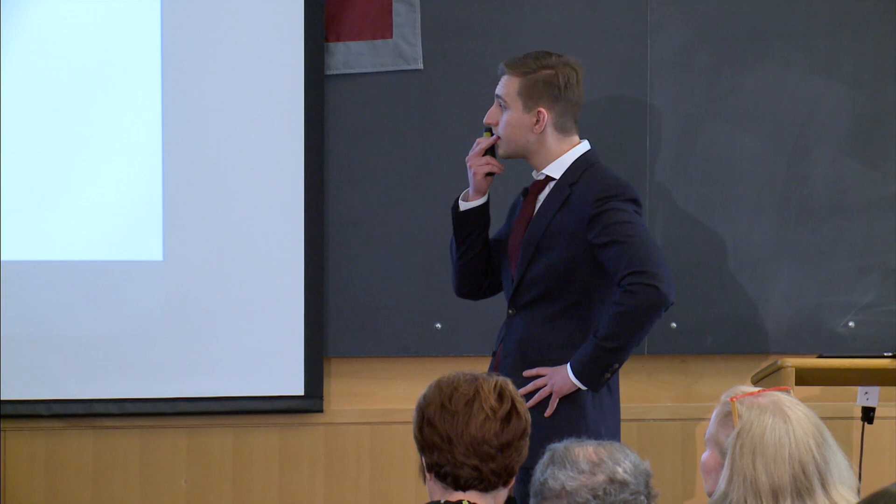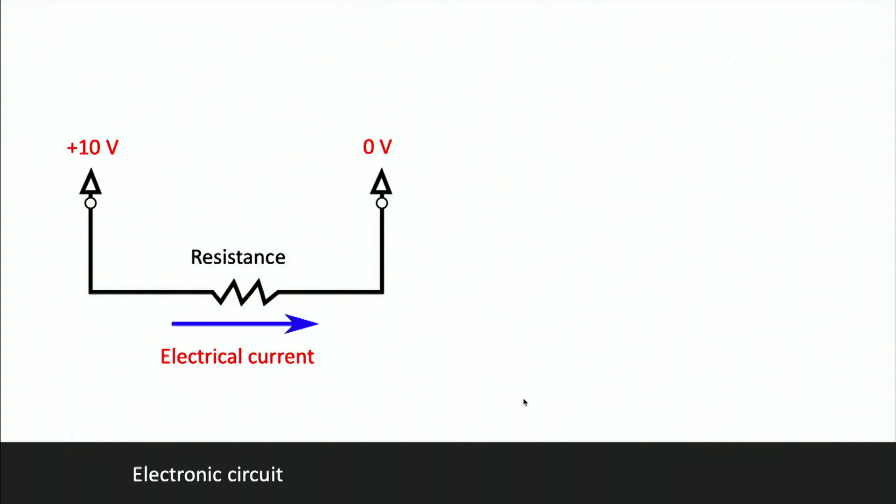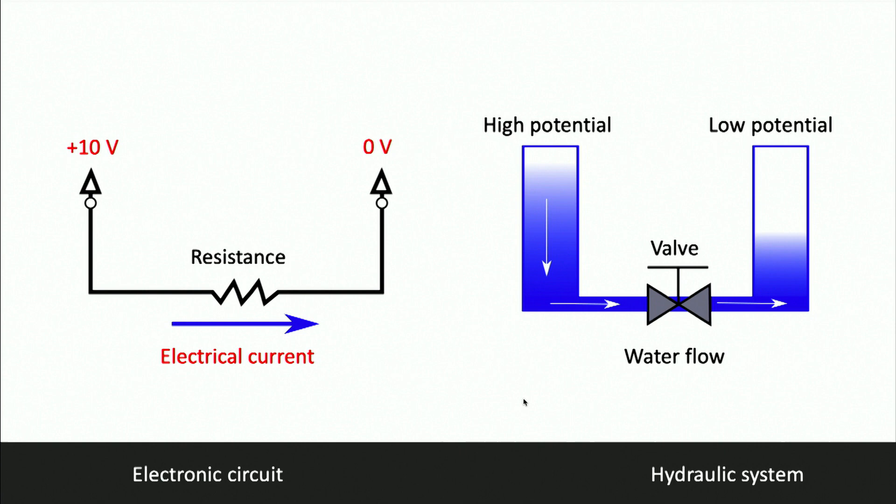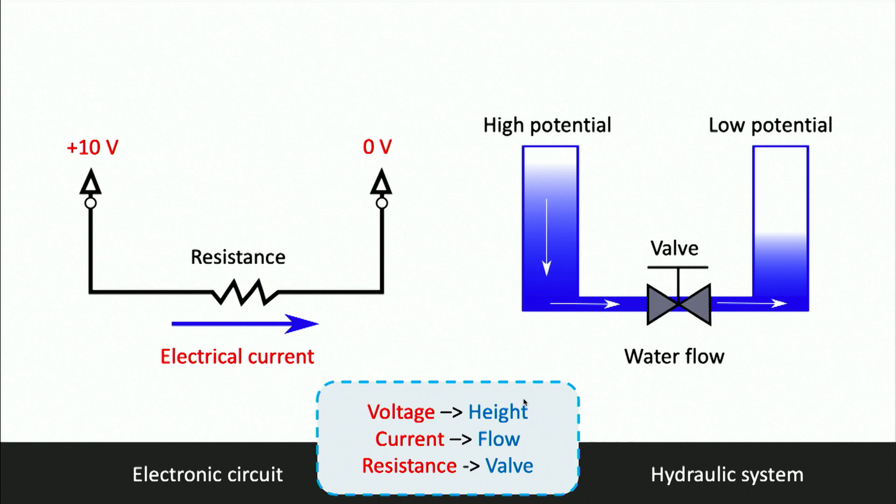To begin with, let me ask you to go back to the time when you were in high school and remember how your teacher introduced the concept of electrical current, voltage and resistance. Most likely, this was done by means of analogy between an electronic circuit and a hydraulic system containing two water tanks connected by a narrow pipe. In that case, the voltage was analogous to the difference in height level, and the water flow was analogous to the electrical current, and the valve acts like a resistor which impedes the flow.